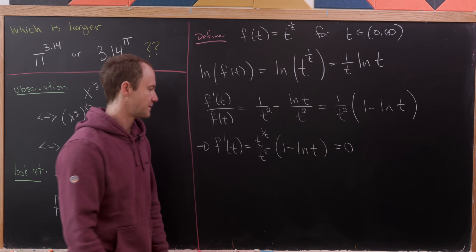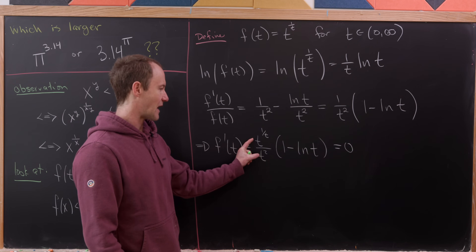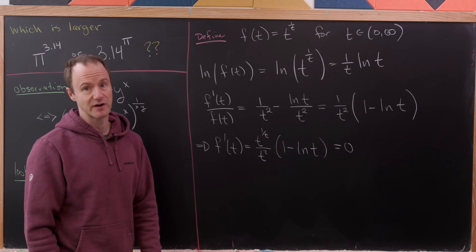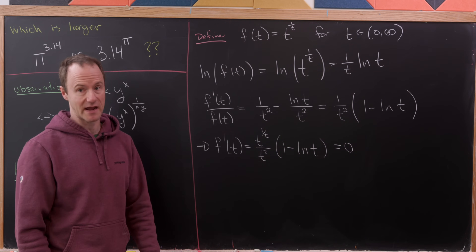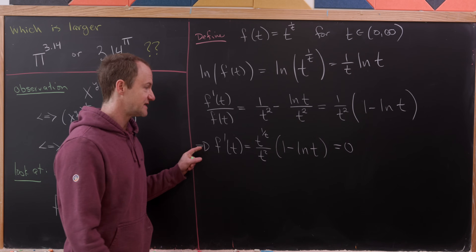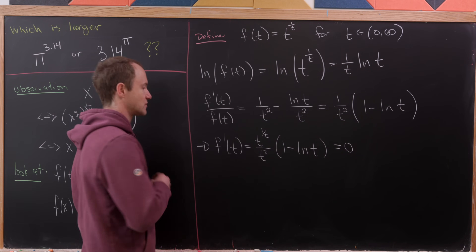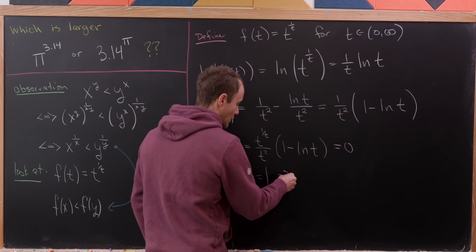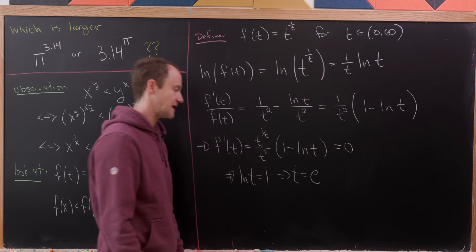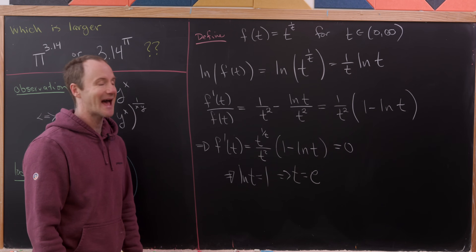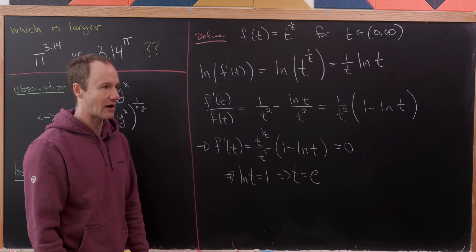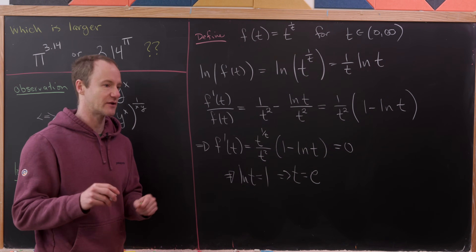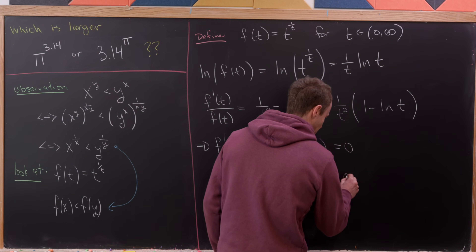Setting f'(t) = 0, we note that the factor t^(1/t)/t² is never zero on our domain, so f'(t) = 0 if and only if 1 − ln(t) = 0, meaning ln(t) = 1, which happens when t = e. So our only critical point is at t = e. To find intervals of increase and decrease, we use a number line starting at 0 (open circle) with e marked as the critical point.